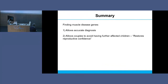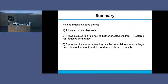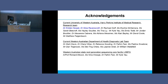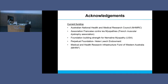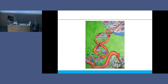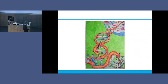In summary, finding muscle genes allows accurate diagnosis, allows couples to avoid having further affected children - as one colleague says, it restores reproductive confidence - and preconception carrier screening has the potential to prevent a large proportion of infant mortality and morbidity in our society. I have an amazing team in this building and in the PathWest building next door. I want to finish with this picture: a drawing by a Turkish teenage girl, shown in her wheelchair at the bottom, working in the laboratory to find the cure where workmen can repair the mutation in her DNA and make her well. I think that's an extraordinary picture. Thank you.